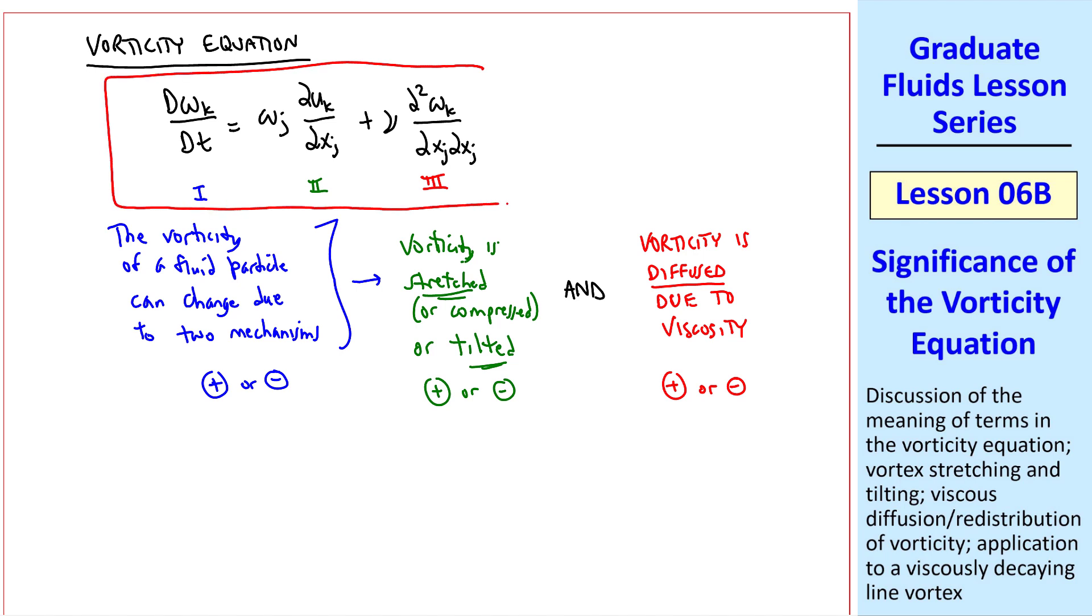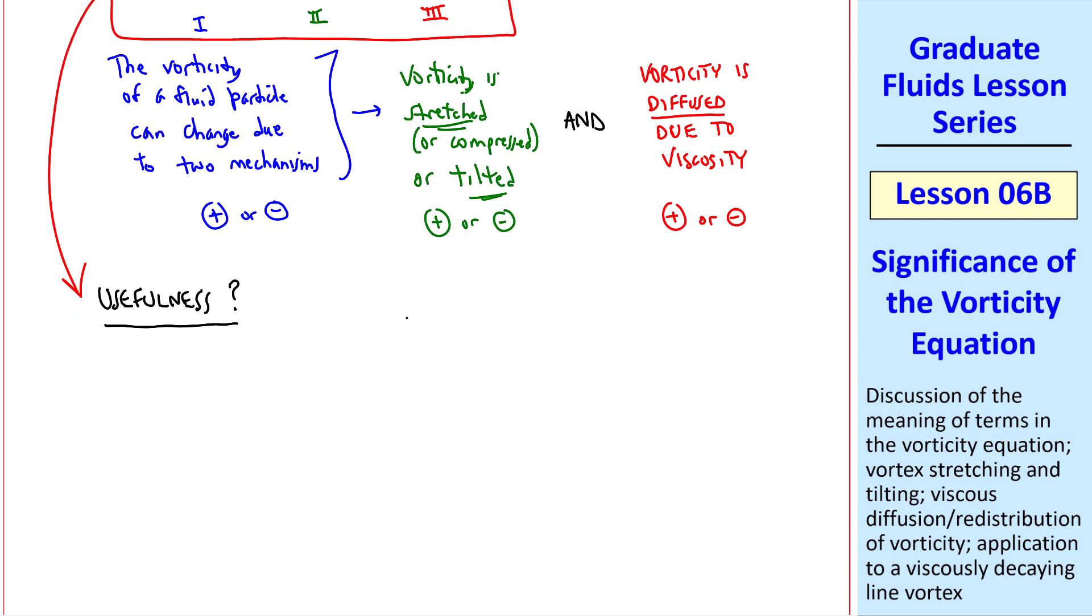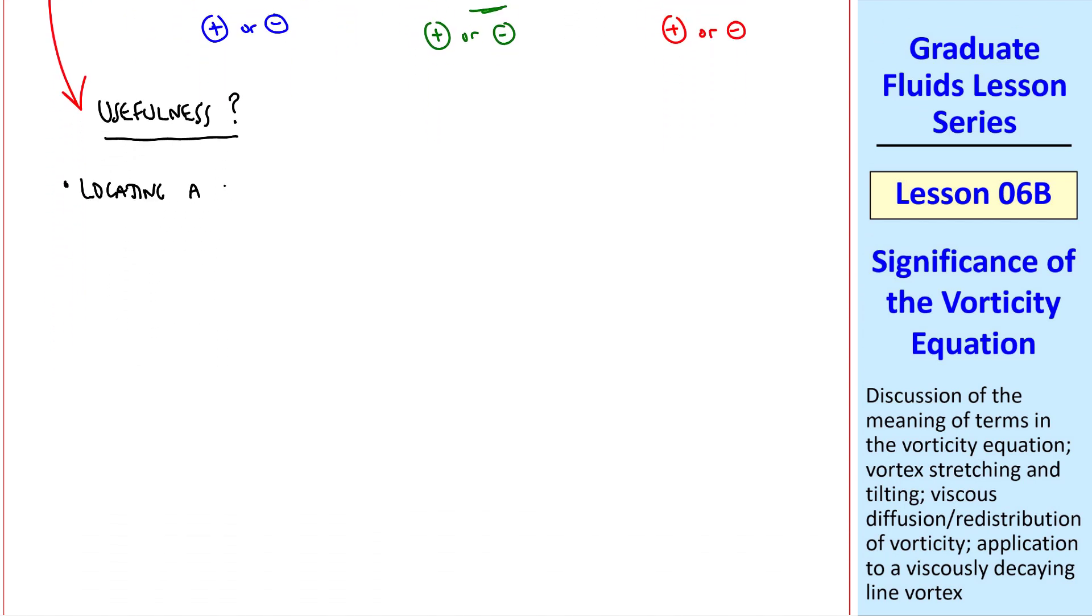Now let's talk about the usefulness of this equation. Recall that we derived it from the Navier-Stokes equation. So this vorticity equation really has no additional information than what is already contained in the Navier-Stokes equation. It's not a fundamental equation of fluid motion. So what is its usefulness? Why do we even care about it? I'll give you some examples of its usefulness.